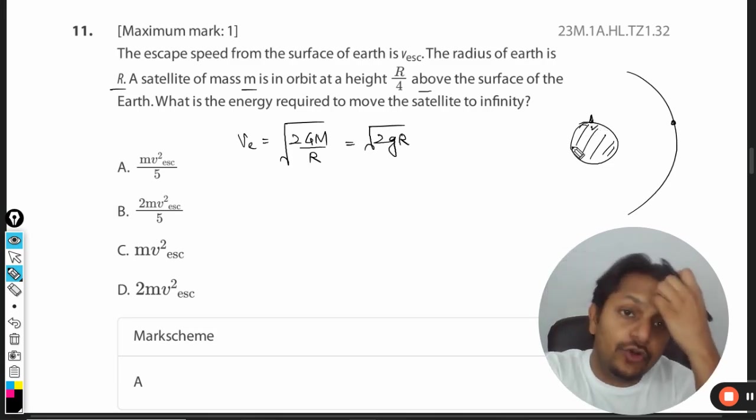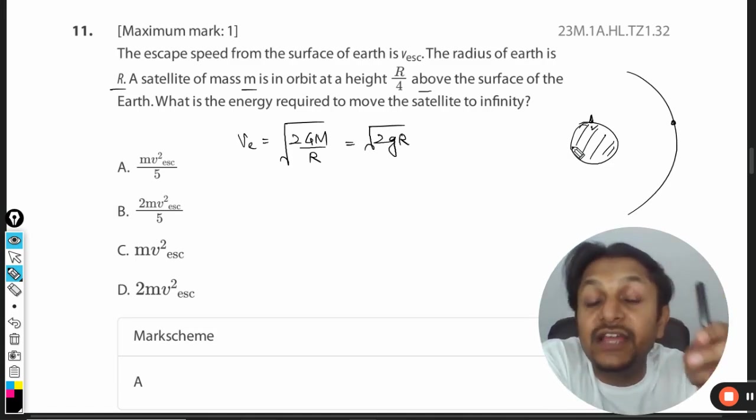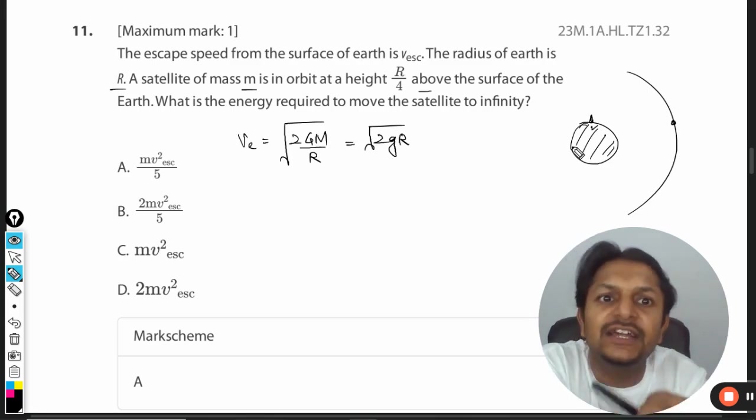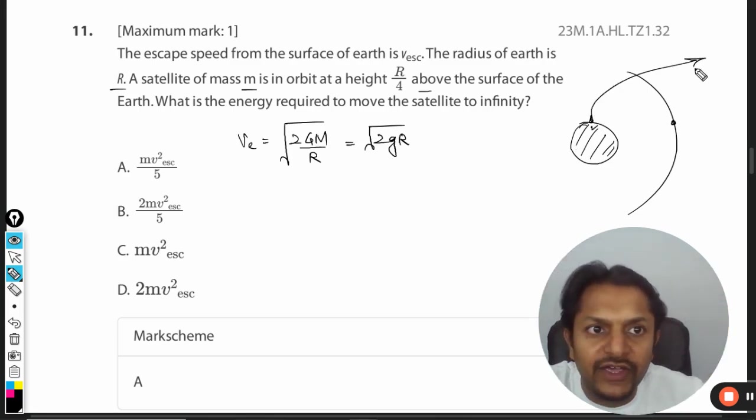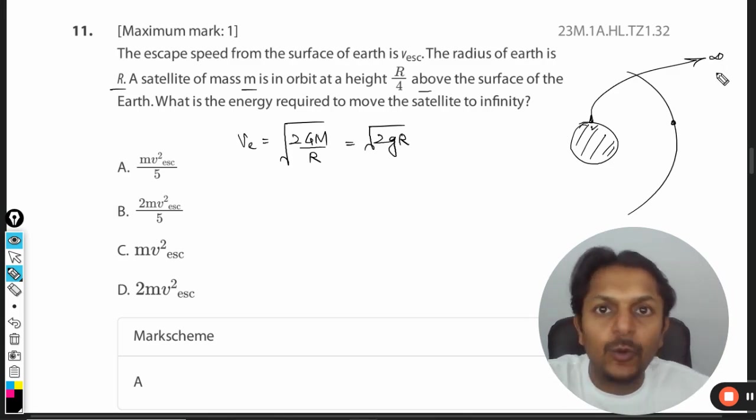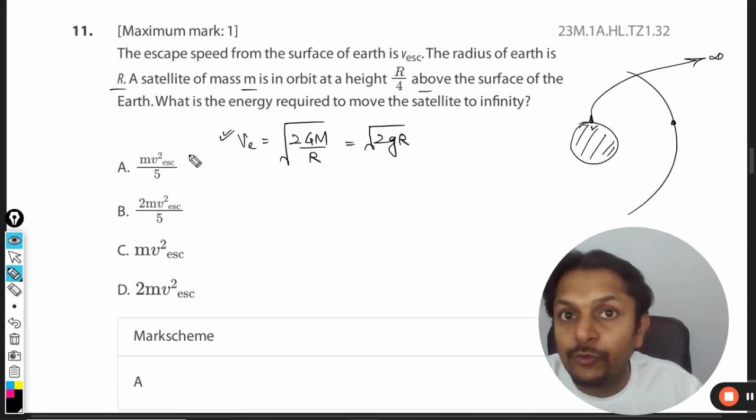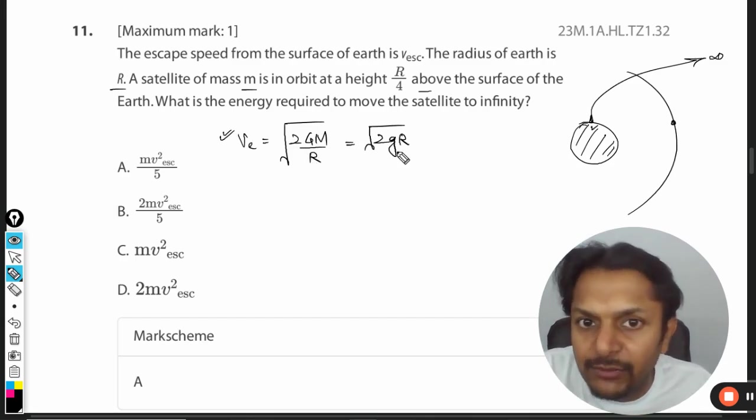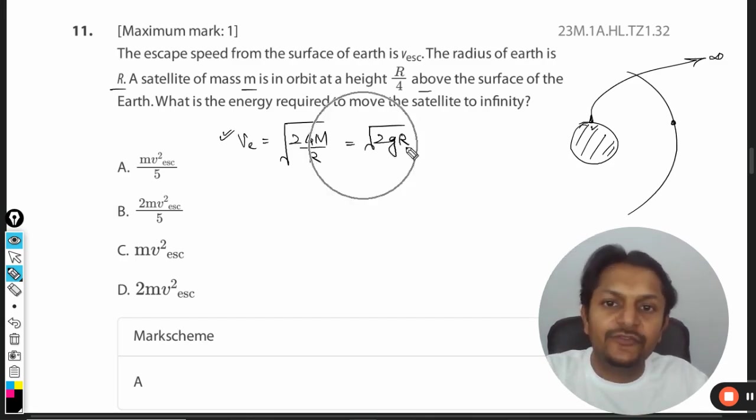Both of these formulas are valid only for a rocket sitting on the surface of Earth. If there's a rocket on the surface and you ask what velocity should be given so that it never returns and goes to infinite distance, that velocity is given by this formula. The formula √(2GM/R) is given in your data booklet; √(2gR) is not.